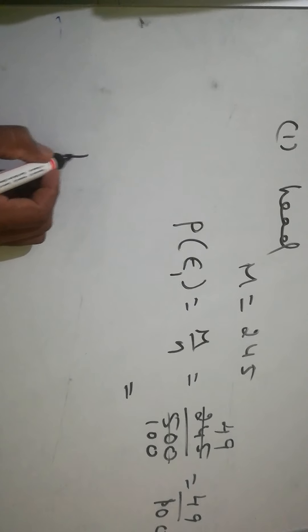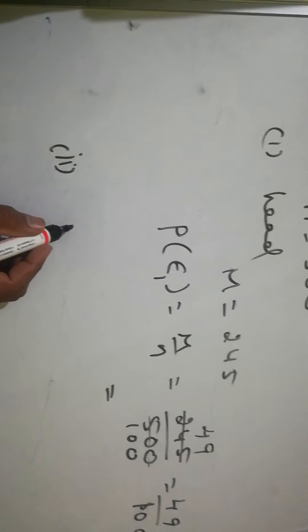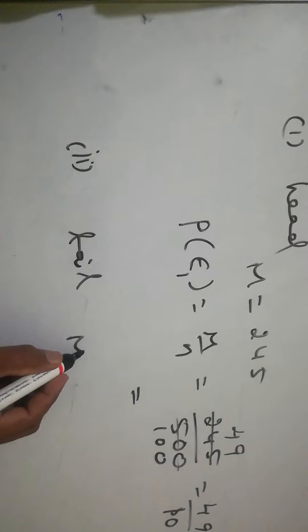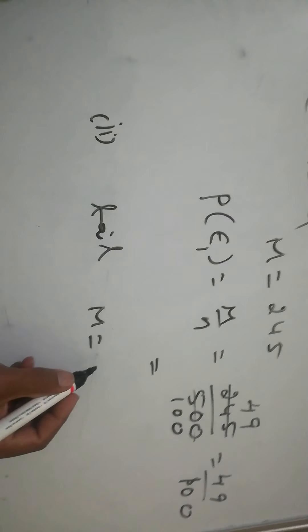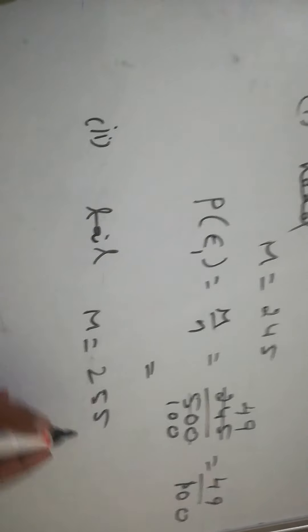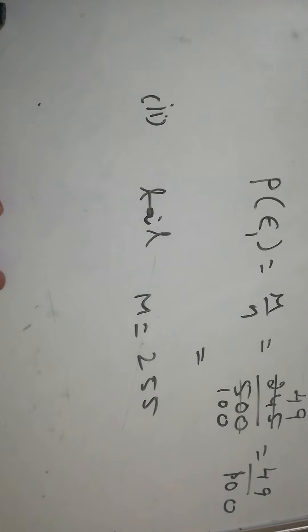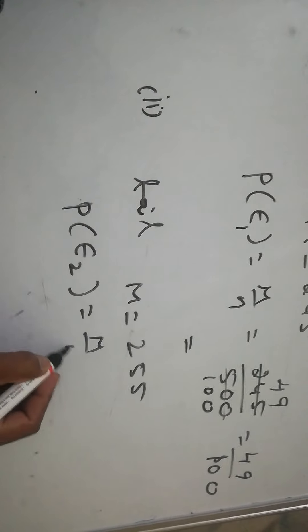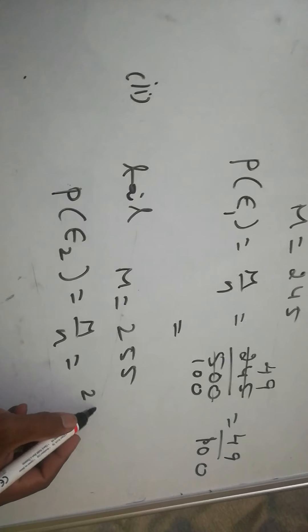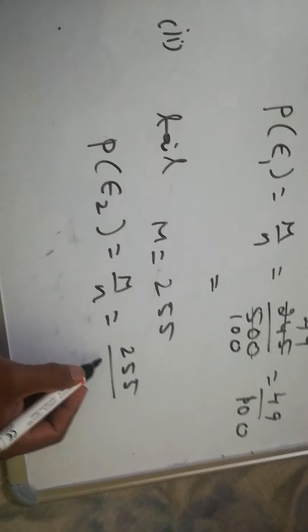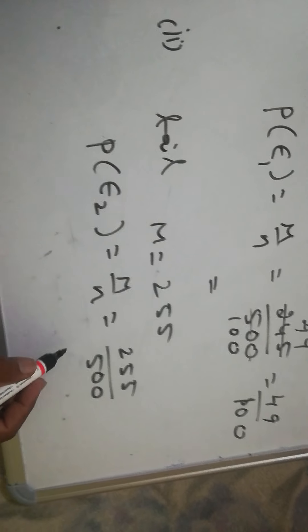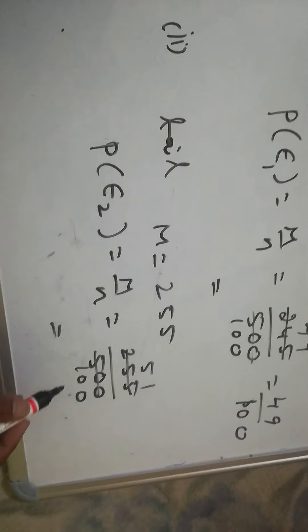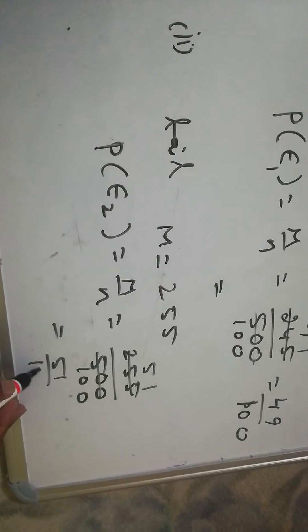The second question asks for the probability of a tail. The number of tails is 255, so M equals 255. Using the formula P of E2 equals M by N, that is 255 divided by 500. Simplifying, the answer is 51 by 100.